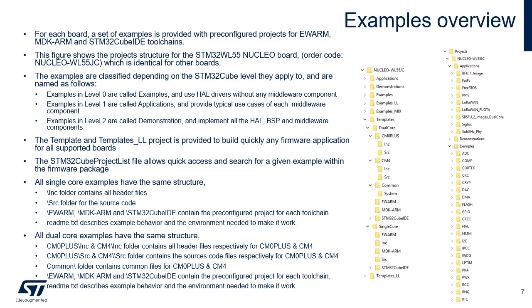All dual-core examples have the same structure. The CM0+ Inc and CM4 Inc folders contain all header files respectively for CM0+ and CM4. The CM0+ Src and CM4 Src folders contain all source code files respectively for CM0+ and CM4. The Common folder contains common files for both CM0+ and CM4. The EWARM, MDK-ARM, and STM32 Cube IDE folders contain the pre-configured project for each toolchain. A README text file describes the example behavior and environment needed to make it work.